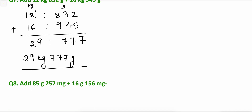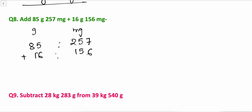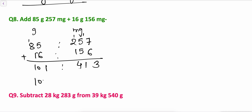Let's take one more addition example with grams and milligrams: 85 grams 257 milligrams plus 16 grams 156 milligrams. Start from the right: 7 plus 6 is 13, carry 1; 5 plus 5 is 10 plus 1 carry is 11, carry 1; 2 plus 1 is 3 plus 1 is 4. For grams: 5 plus 6 is 11, 8 plus 1 plus 1 carry is 10. The answer is 101 grams and 413 milligrams.